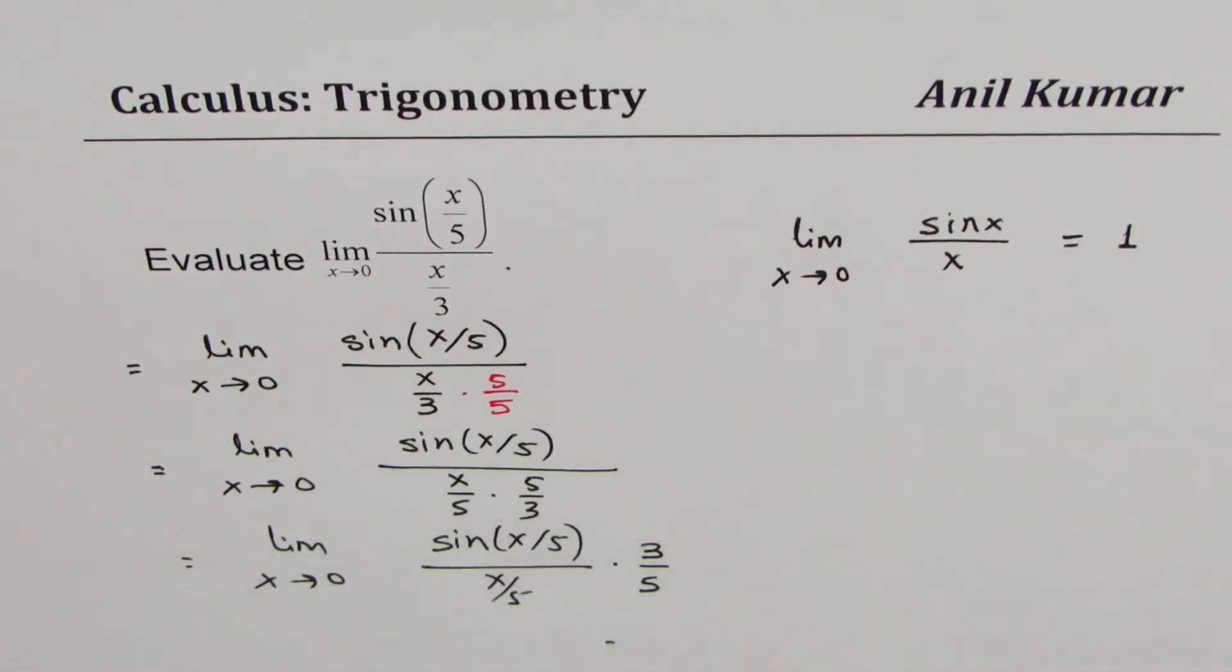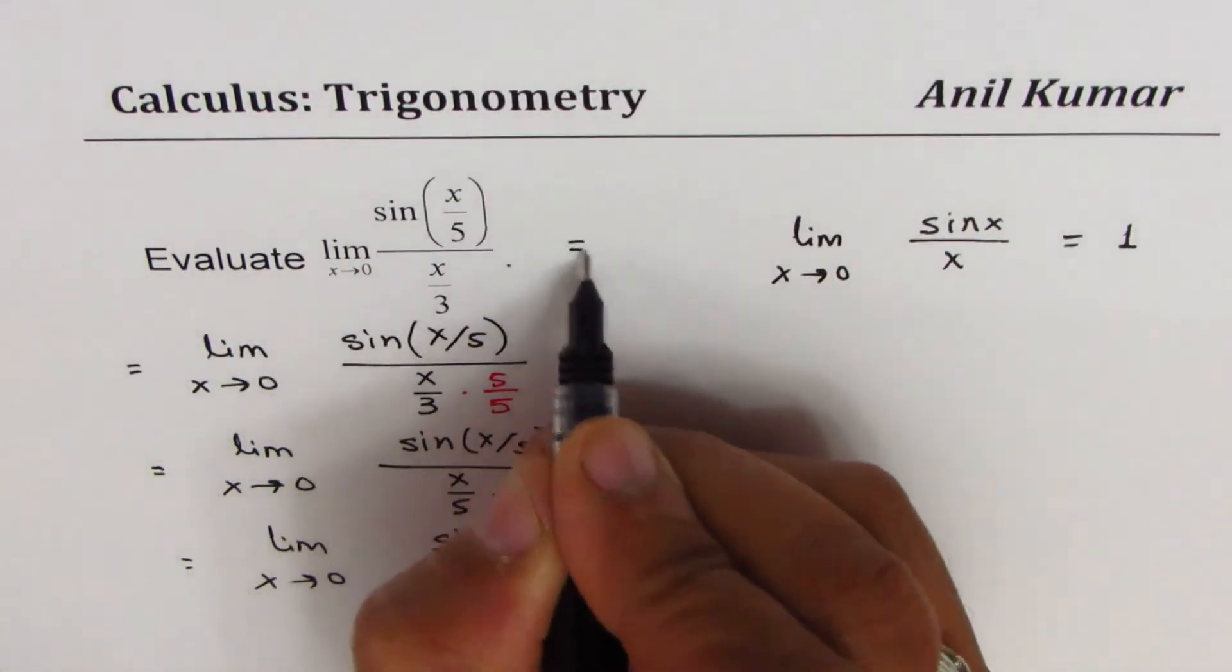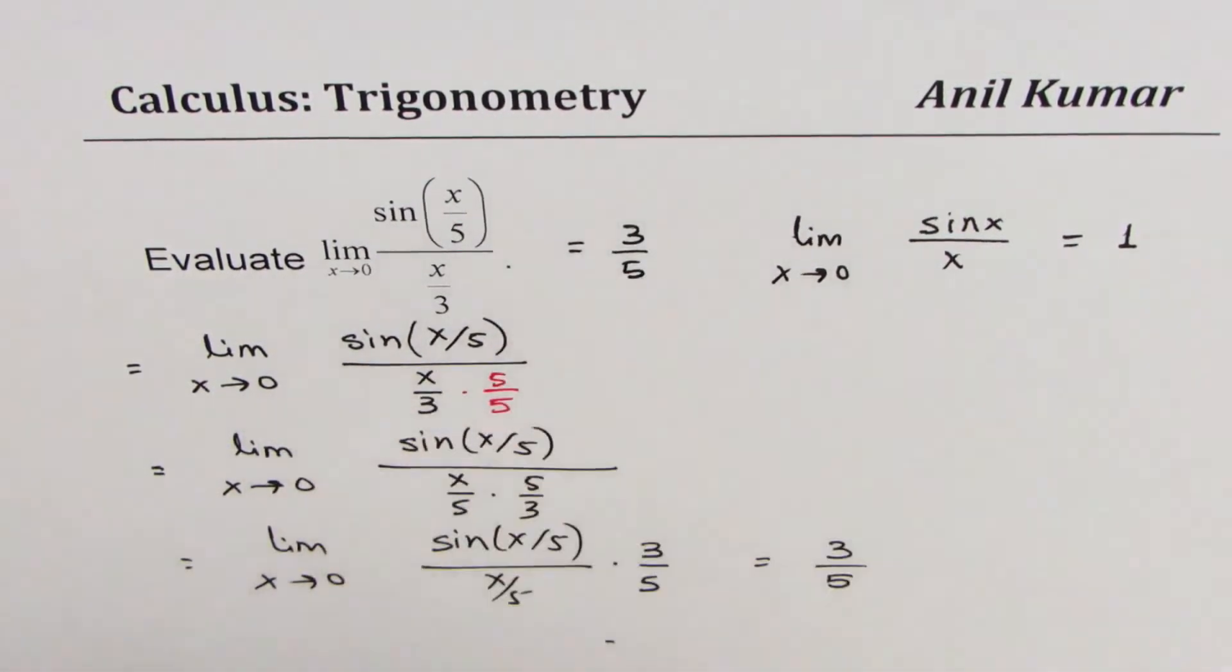Now you can get the answer. The limit of the first part is 1, and this is a constant, so we could write this as 3/5. So the answer is 3/5, and that is how you could actually solve these questions.